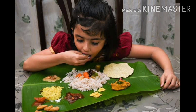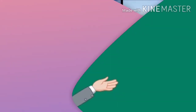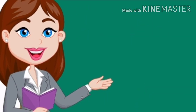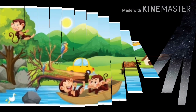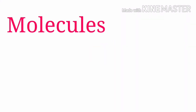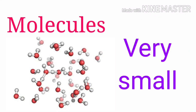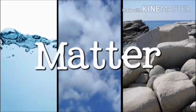The air we breathe, the food we take and the water we drink, all have matter in them. Do you know that even we are made up of matter? The space occupied by an object is called its volume. Matter is made up of many tiny particles called molecules. Molecules are very small; we cannot see them with our eyes.